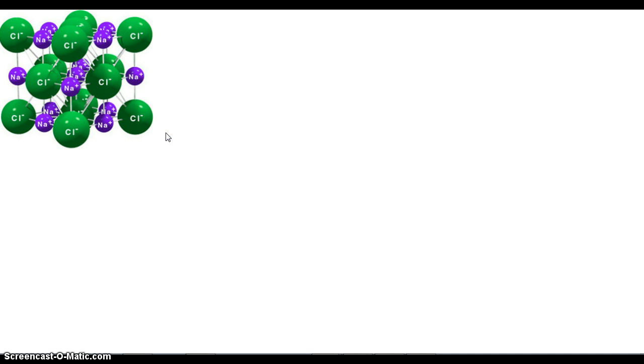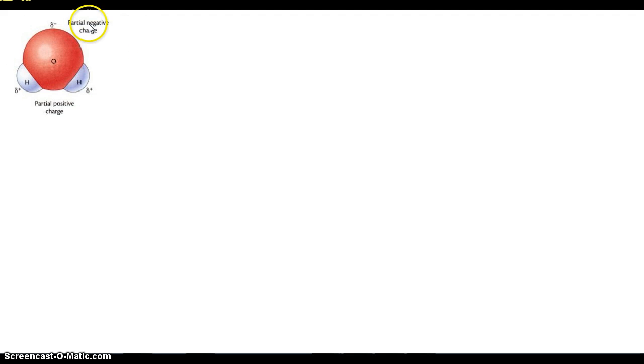So why does sodium chloride actually dissolve in water? Well, let's first take a look at water. Here's a visual representation of water. The red part represents oxygen, and the white or bluish part represents hydrogen. So water is H2O, two hydrogens and one oxygen.